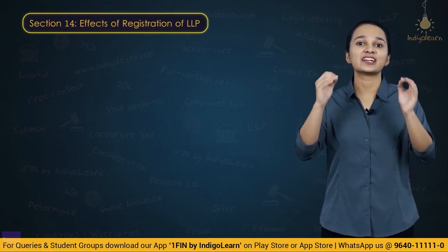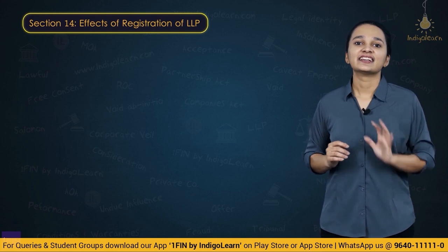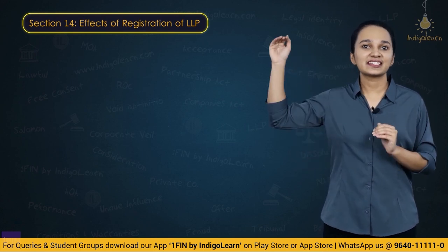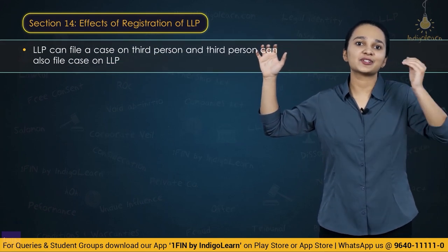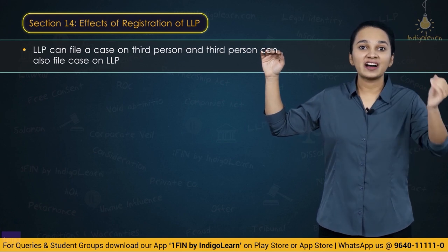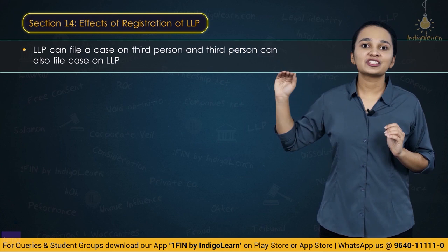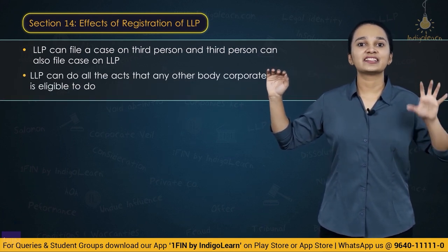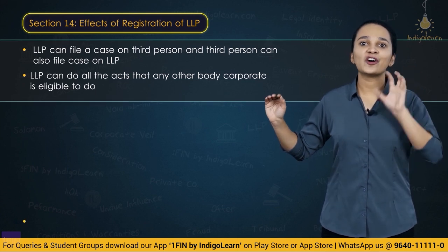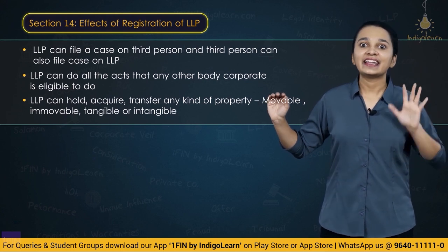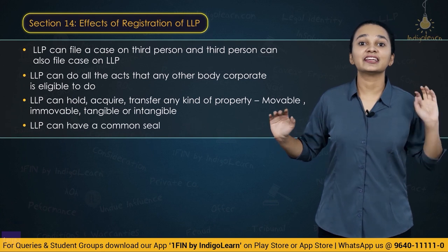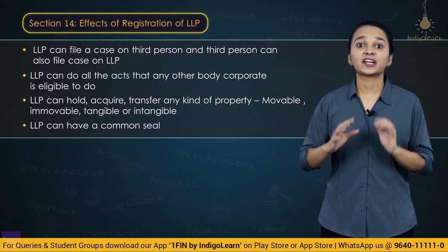Section 14 talks about effects of registration of LLP, remembered by the acronym COPS. C stands for cases — LLP can now sue others and be sued. O stands for any other act that any body corporate is eligible to do — the LLP will also be eligible to do such acts. P stands for property — LLP can now hold, acquire, and transfer any kind of property, movable, immovable, tangible, or intangible. S stands for seal — LLP may now have a common seal. The incorporation process involves: filing e-form 1 for name reservation, filing e-form 2 with incorporation documents, and filing e-form 3 — the LLP agreement — within 30 days from the date of incorporation.